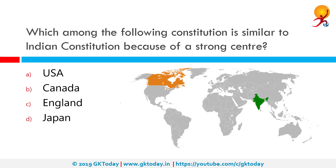Which foreign constitution is similar to the Indian constitution because of a strong center? The correct answer is Canada. India adopted the idea of a federal structure with a strong center from the Canadian constitution. For example, the residuary powers mentioned in Article 248 are with the center, which shows that the center is dominant over state governments.